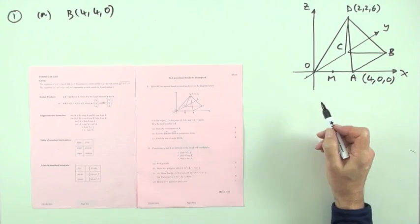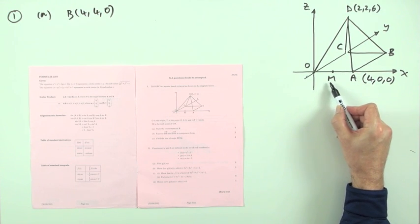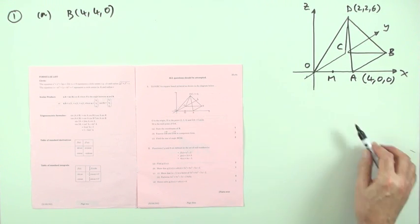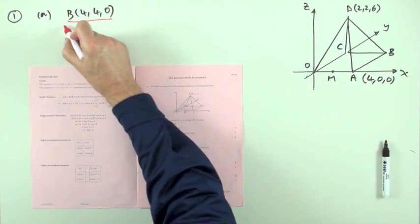It also says M is the midpoint of OA, so I know that M is going to be two, zero, zero. I'll put that in the next bit when it comes to ask for it. So there's the first part.